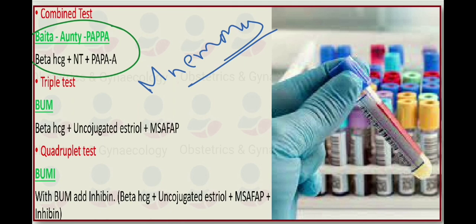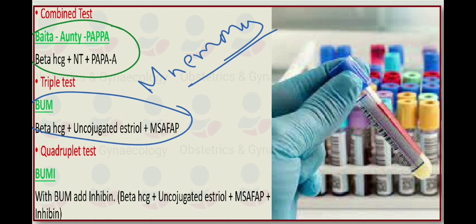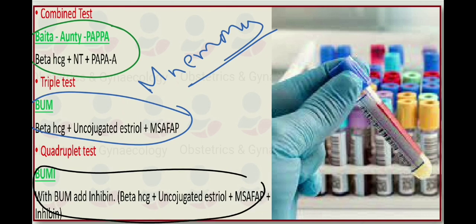For the triple test, we have the mnemonic BUM: B is for beta-HCG, U is for unconjugated estriol, and M is for maternal serum alpha-fetoprotein. For the quadruple test, we use the mnemonic BUMI, which is the triple test components plus inhibin — so beta-HCG, unconjugated estriol, maternal serum alpha-fetoprotein, and inhibin.